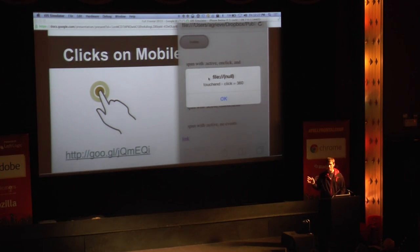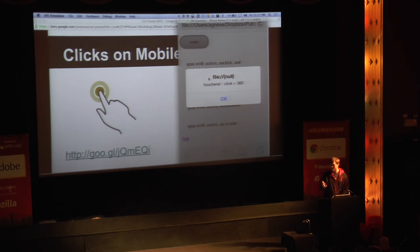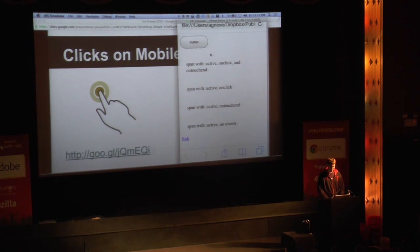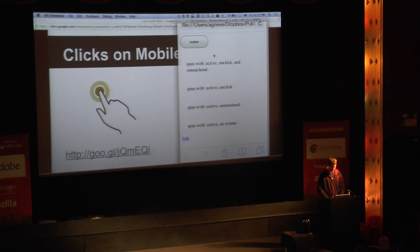I got a touch end event — that's when my finger came off the screen. Then I got a click event when my JavaScript is actually going to run. There was 360 milliseconds delay between the two, and this is on my laptop fast simulator. This is all intentional delay put there by the browser to help you.